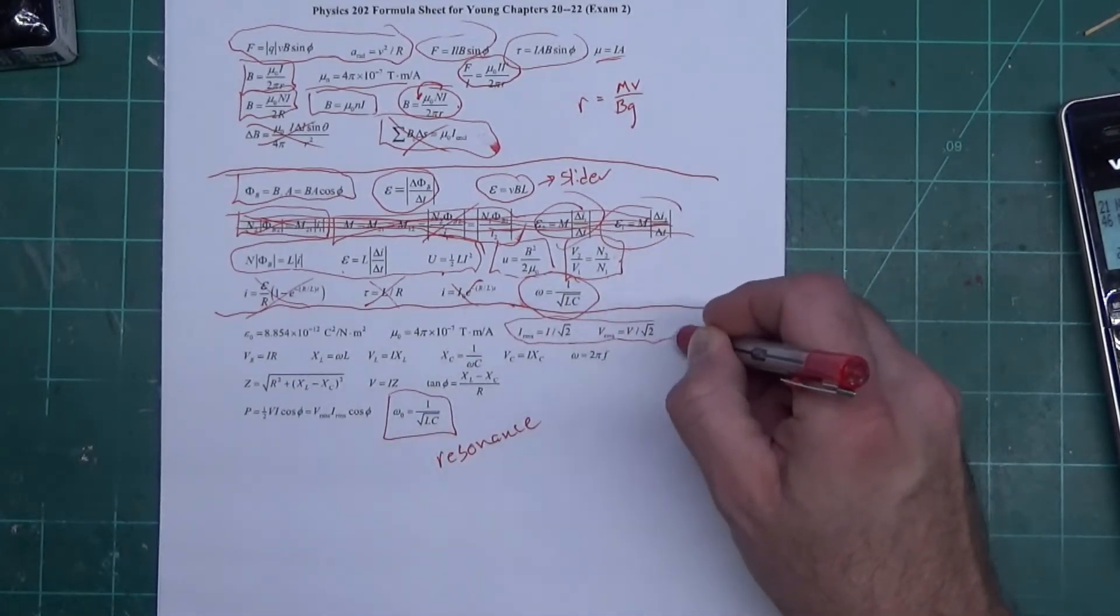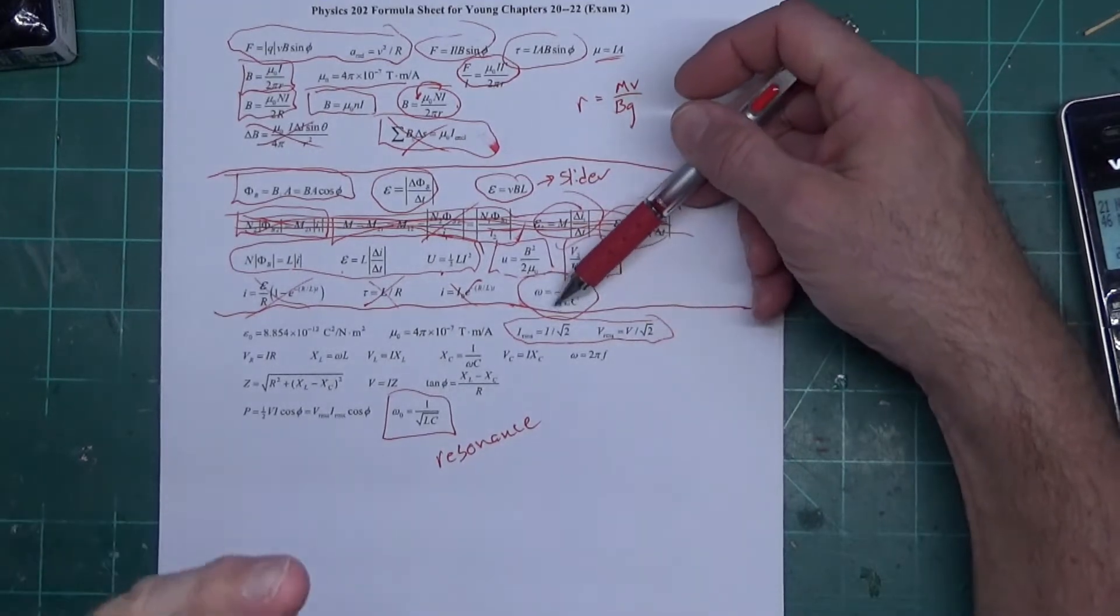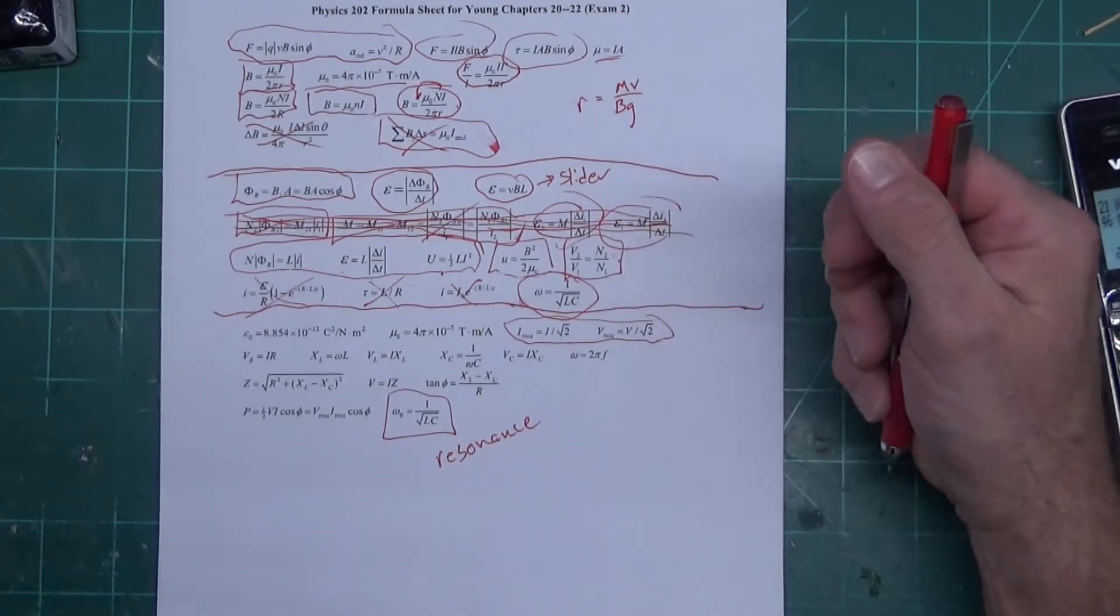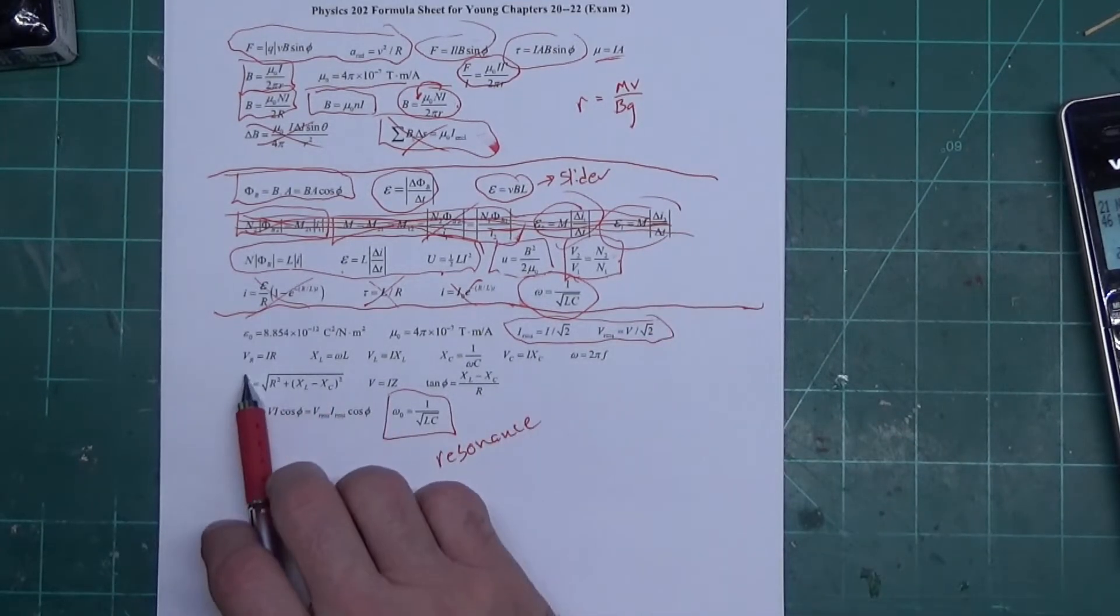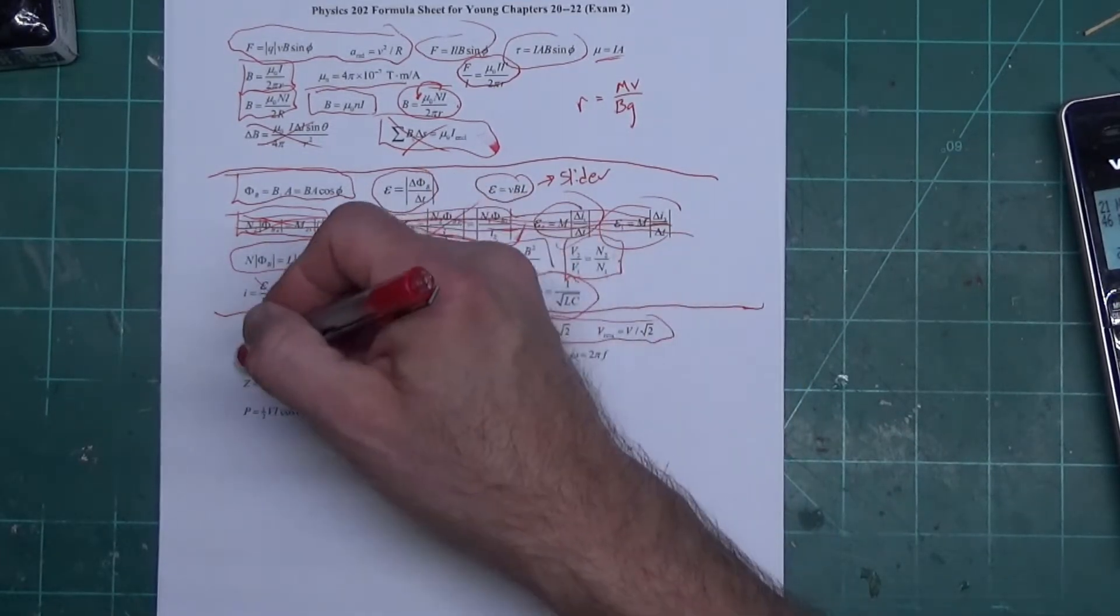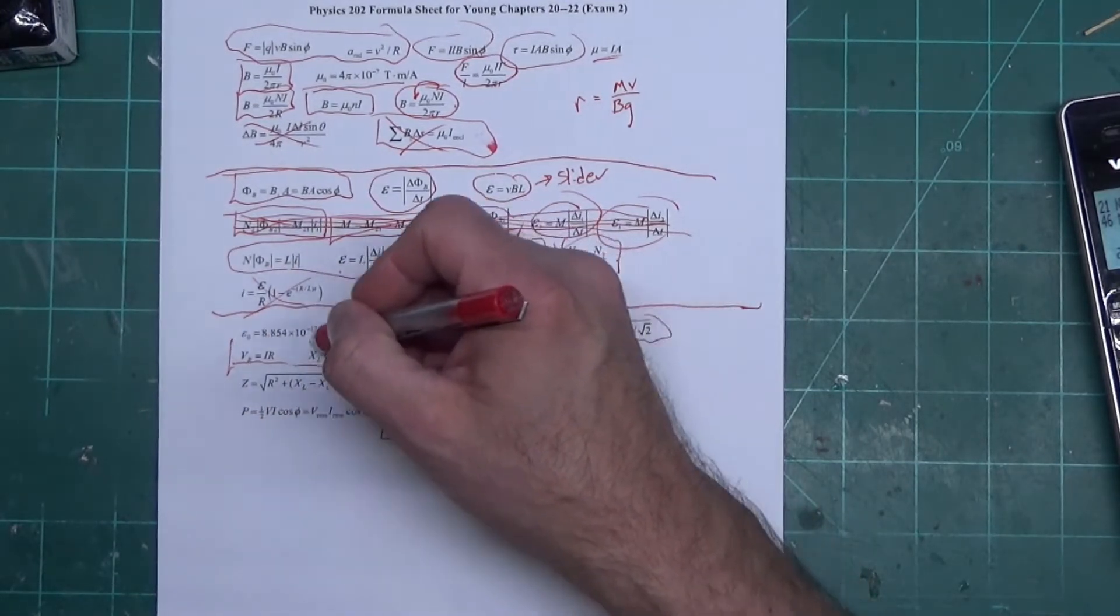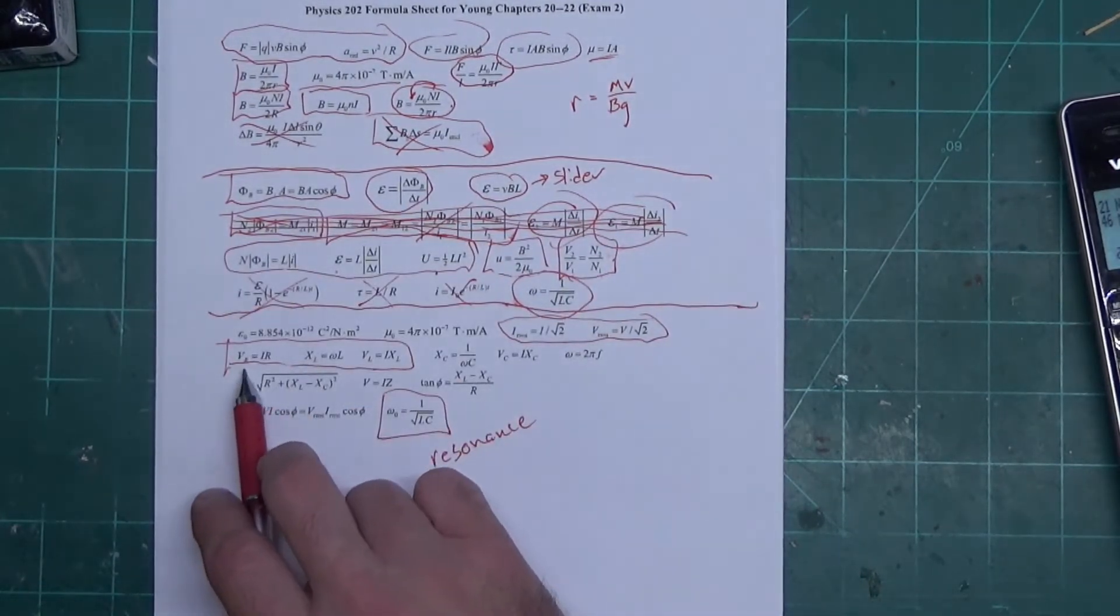Here is the equations relating peak current to RMS current, peak voltage to RMS voltage. Now moving down, we have the reactance. Actually, the voltage and current - remember the current is the only thing that's constant throughout the circuit.